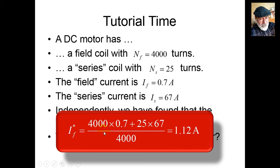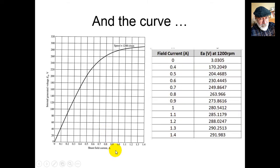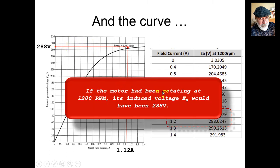We enter 1.12 into the curve, either graphically or by interpolating the table. We get a voltage of 288 volts. This means if the motor had been rotating at 1200 RPM, its induced voltage Ea would have been 288 volts given the values of IF and IS.